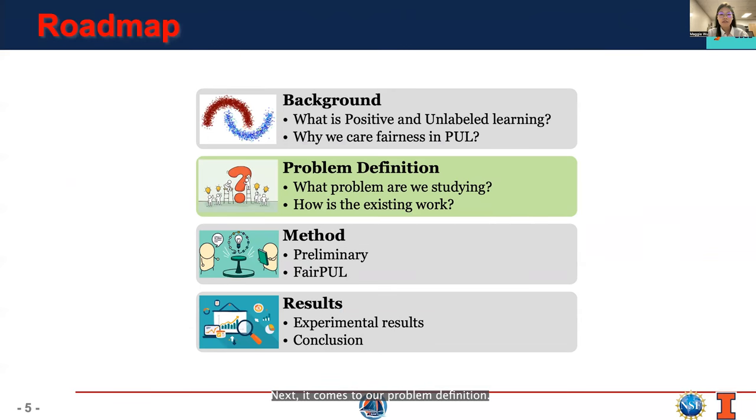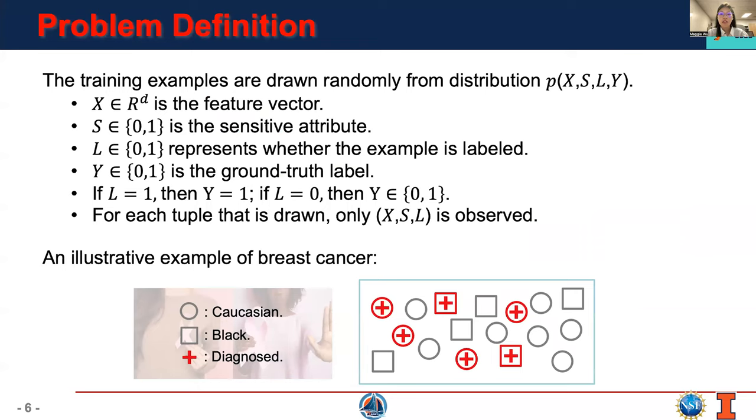Next, it comes to our problem definition. The training examples are drawn randomly from distribution p(X,S,L,Y), where X is a feature vector, S is a sensitive attribute, which we consider as binary here. The binary label L represents whether the example is labeled or not. The binary Y is a ground-truth label.